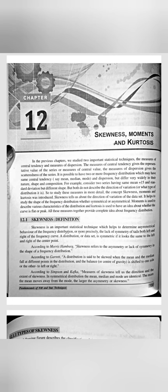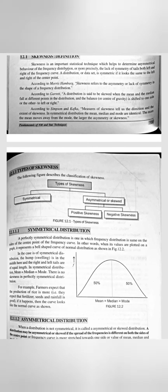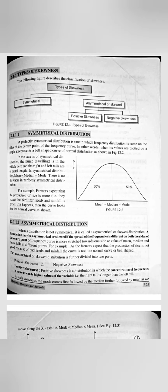The next chapter of Statistical Techniques is Skewness and Kurtosis. First, the definition of skewness — according to different scientists, you can memorize any one or two. Then what are the different types of skewness: symmetrical and asymmetrical. Asymmetrical skewness is further of two types: positive and negative skewness. This is important — what happens in positive and negative skewness, and in these cases what is the relation between mean, median and mode. This diagram is also very important — Figures 12.3 and 12.4.